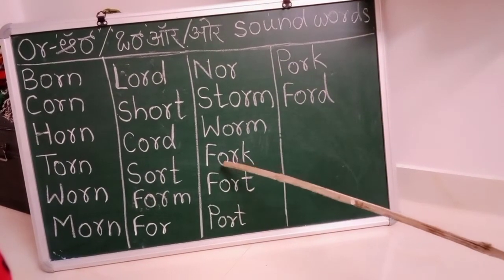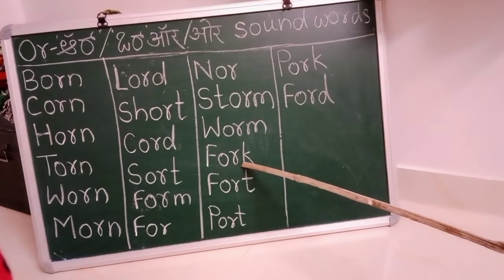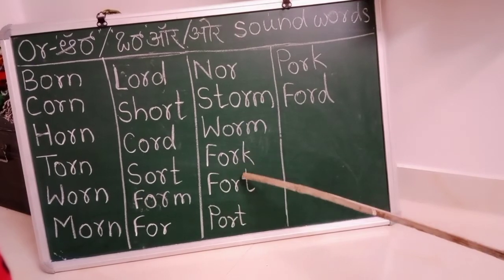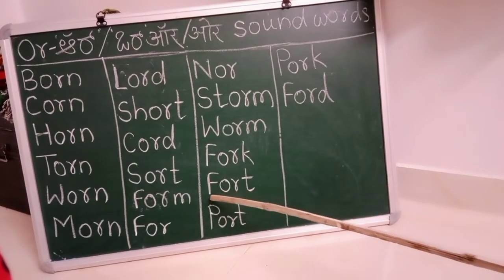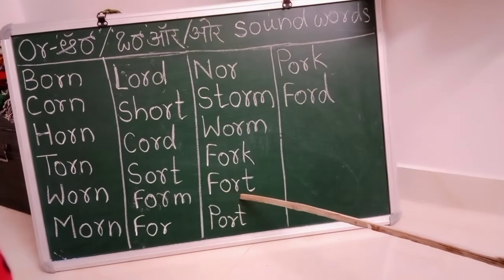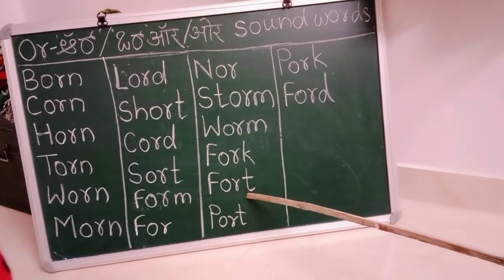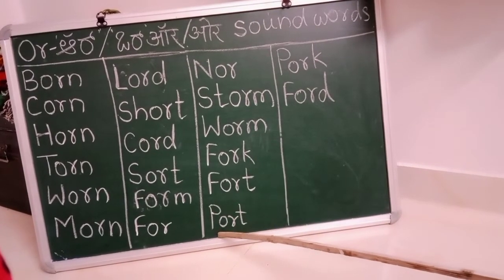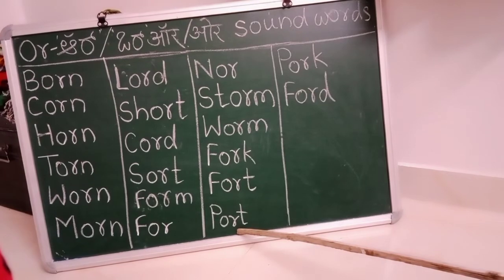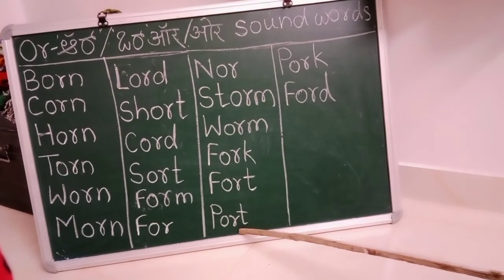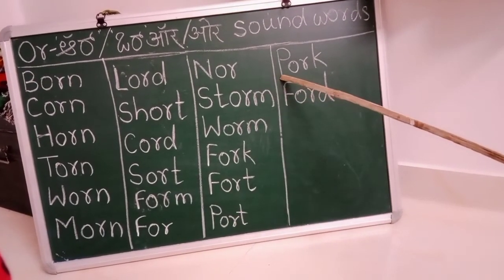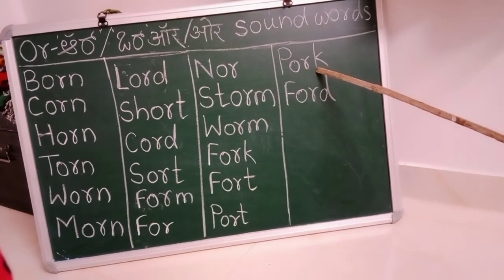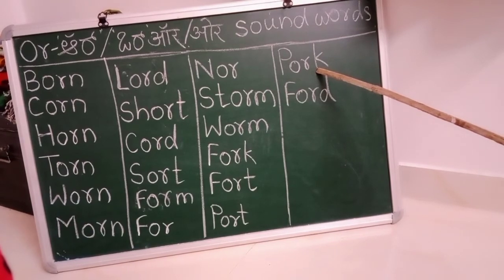Or: O, R. Fork: F, o, r, k. F, o, r, k. Fork. Fort: F, o, r, t. F, o, r, t. Fort. Port: P, o, r, t. Port. P, o, r, t. Port. Pork: P, o, r, k. P, o, r, k. Pork.